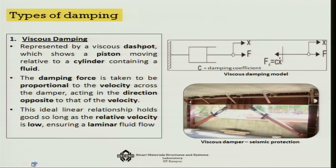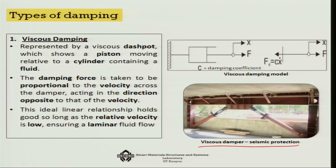There are two important types of damping. The first is viscous damping — like a speed-control door closer, which is essentially a dashpot with a piston and cylinder combination.